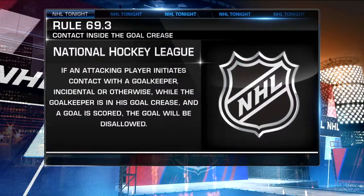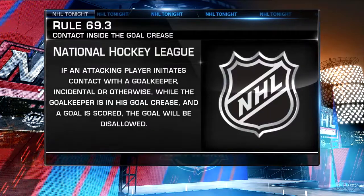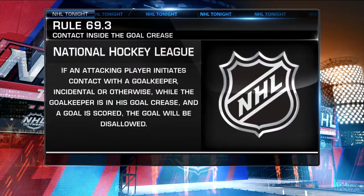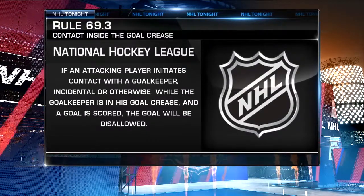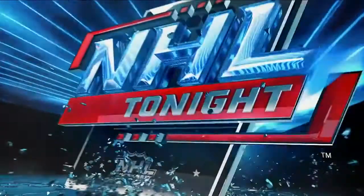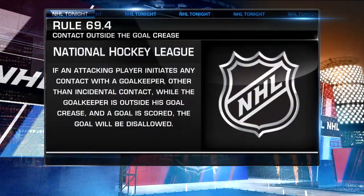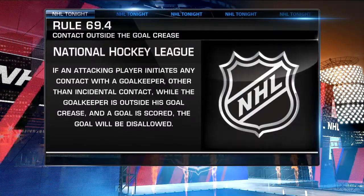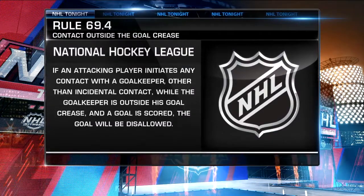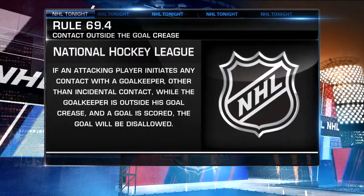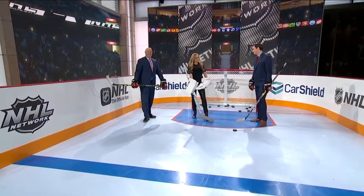Let's look at the rule itself. Rule 69.3 — contact inside the goal crease: if an attacking player initiates contact with a goalkeeper, incidental or otherwise, while the goalie is in the goal crease and the goal is scored, the goal will be disallowed. Rule 69.4 — contact outside the goal crease: if an attacking player initiates any contact with a goalkeeper other than incidental contact while the goalkeeper is outside his goal crease and the goal is scored, the goal will be disallowed. I'm still a little confused about the rule, and I think Cam Talbot still wants some explaining.